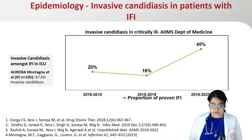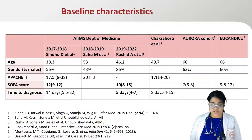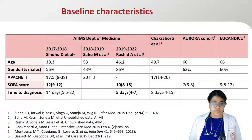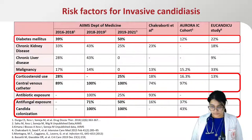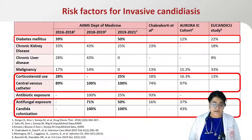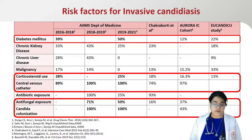Invasive candidiasis follows invasive aspergillosis as the second most common invasive fungal infection in critically ill patients, ranging from 20% to 45% over six years. Our patients are relatively younger and more morbid with a higher SOFA score at admission. Five days was the median time to diagnosis, which has improved over the years, possibly due to non-culture-based diagnostics and rapid automated culture-detecting systems. Amongst risk factors, our cohort had 40–50% patients with diabetes mellitus, almost all had a central venous catheter in situ, and 50–70% had prior antifungal exposure in the last 30 days.